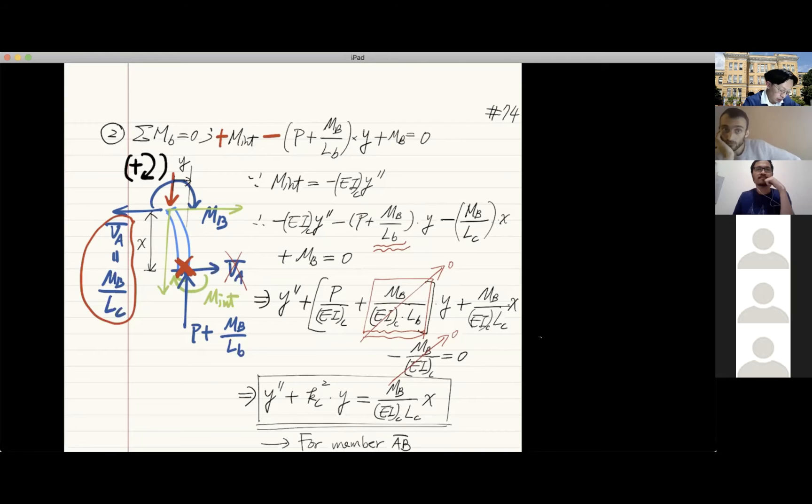When you put the EI definition of internal moment, which is negative EI times y double prime, it comes with a negative sign. So that's why I convert everything from negative sign to be positive sign, that you get this plus the mb.